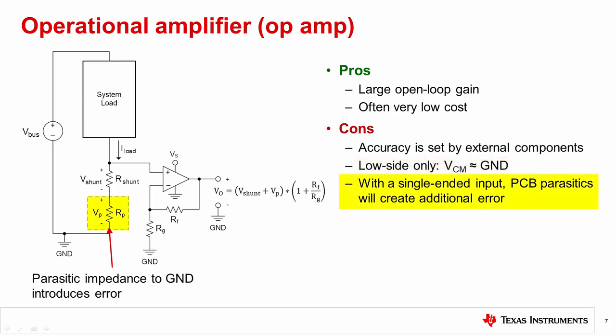If implemented with a single ended input to the op amp, any parasitic impedances on the printed circuit board between the shunt and ground will create errors due to additional voltage drop.